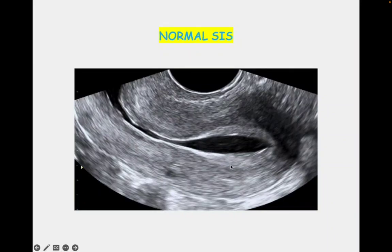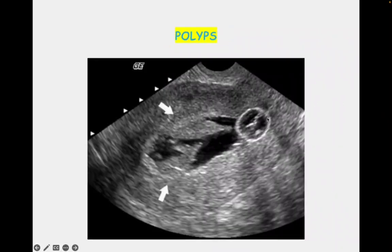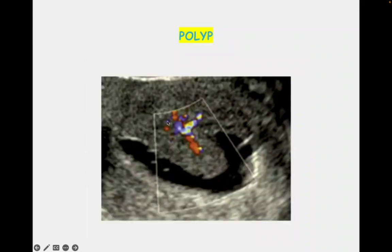This is a normal SIS in sagittal section. When we compare TVS with SIS, as you can see, this is TVS, and when saline is instilled into the same cavity it looks like this. This is SIS done with the Foley's catheter — the balloon is at the internal os. You can see a few polyps here, and when we apply color Doppler, even the feeding vessels can be seen.